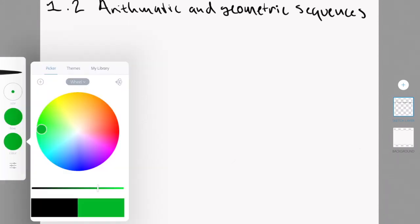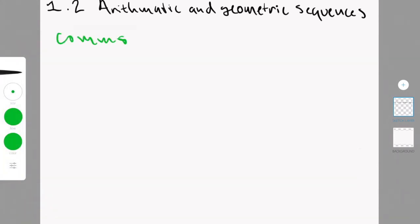So that was actually it for chapter 1.1. Now we're going to talk about chapter 1.2, which is specifically about arithmetic and geometric sequences. So not the series.